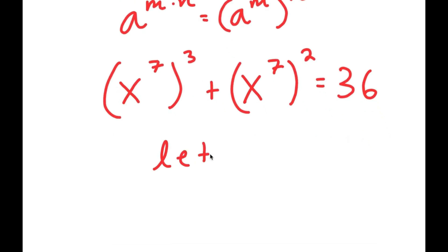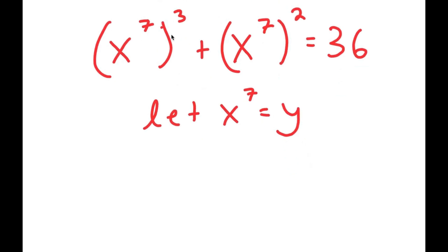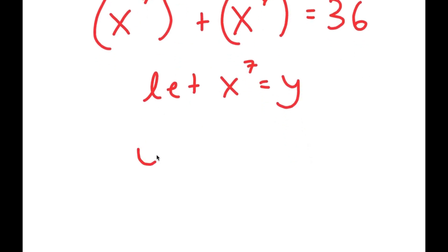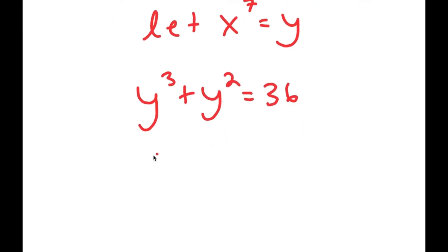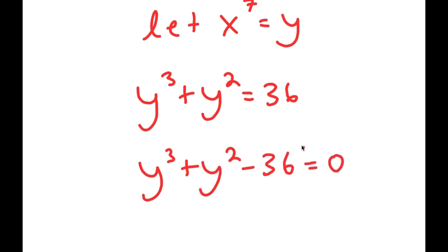From here, I can let x to the power of 7 equal the variable y. So if I substitute y for x to the power of 7, I get y to the power of 3 plus y squared equals 36. Subtracting 36 from both sides gives y to the power of 3 plus y squared minus 36 equals 0.